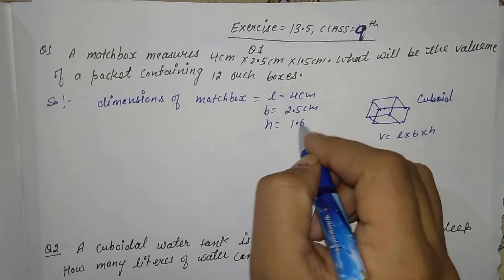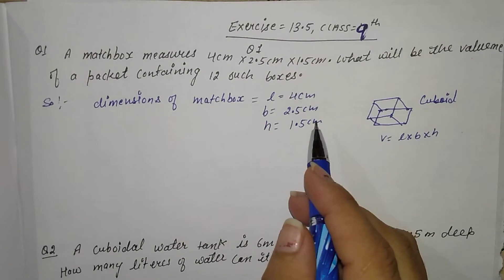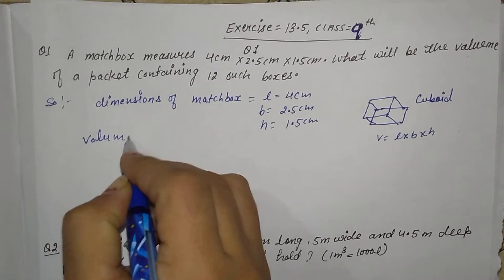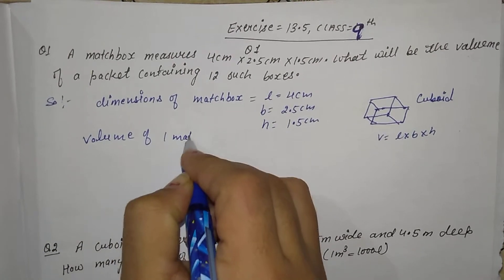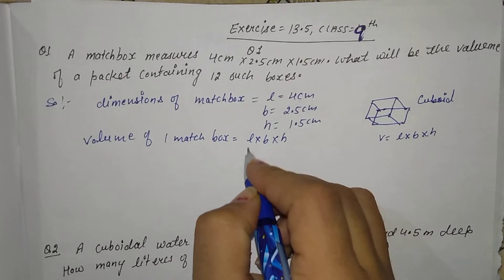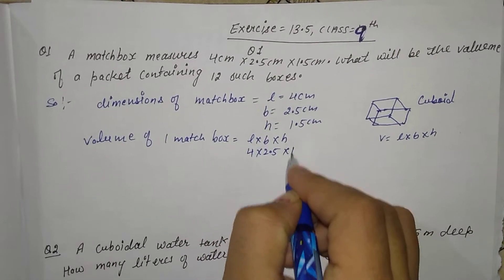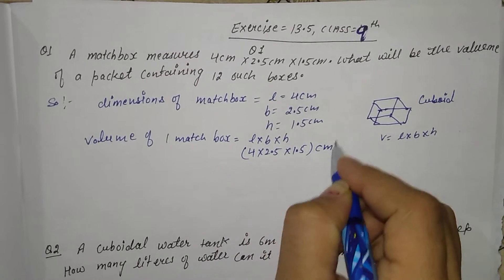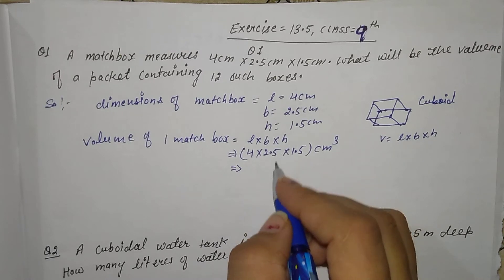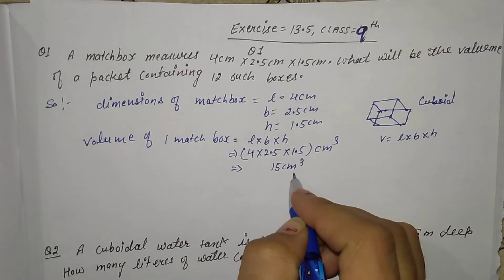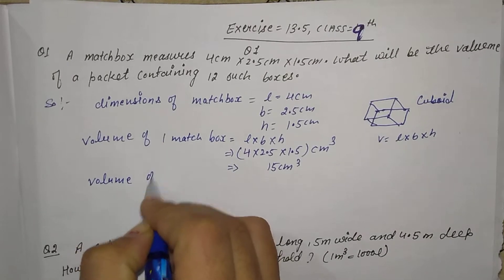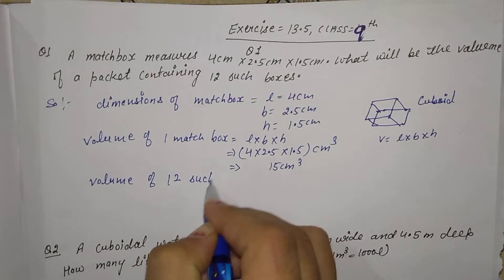Height given is 1.5 cm. L, B, H are given — just put into the formula. So volume of one matchbox = L into B into H = 4 into 2.5 into 1.5 cm cube = 15 cm cube. So volume of 12 such packets will be calculated next.